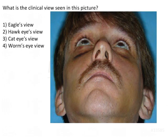The first option is eagle's view, second is hawk eye, third is cat eye, and fourth is worm's eye. Eagle's view is the view used when drones or helicopters are present — the view seen from overhead. Hawk eye and cat eye views are not any recognized views in literature.